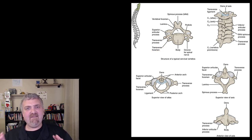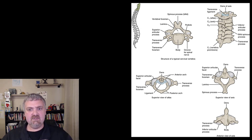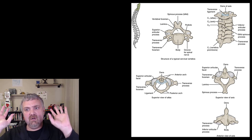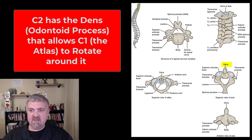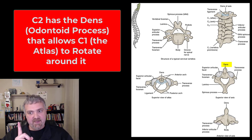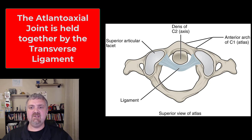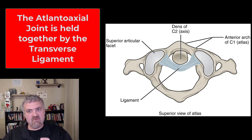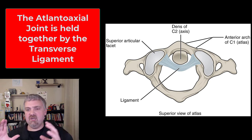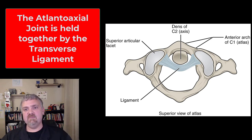C1 doesn't actually have a vertebral body — it just has an anterior and posterior arch, supporting your skull. C2 has a special process called the odontoid process or DENS that pops up, and that's where C1 spins around. This is the atlantoaxial joint: the DENS of C2 pops up, C1 is wrapped around it, and a transverse ligament holds it in place. That's where a lot of rotation in your neck takes place.